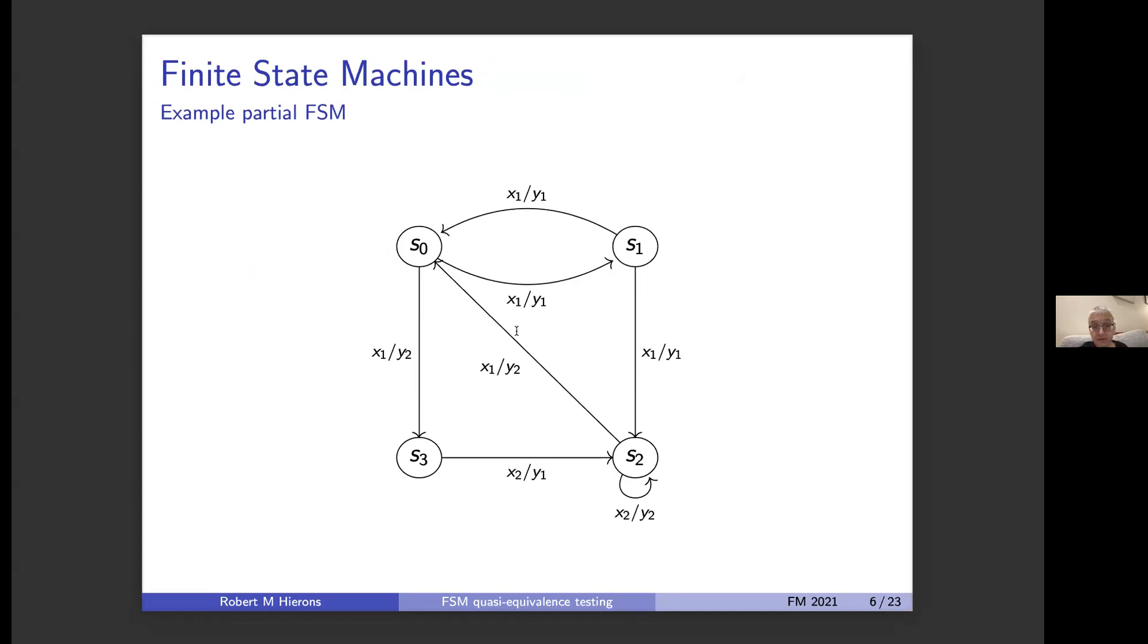We can have nice graphical representations like this one, for example. So here, s0 is meant to represent the initial state. For example, if the system receives input x1 in state s0, then either it produces output y1 and moves to s1, or it produces output y2 and moves to s3. So here we have non-determinism, but this is consistent with observability. You can actually see this machine isn't observable. From s1, input x1, output y1 could either take us to s0 or to s2.